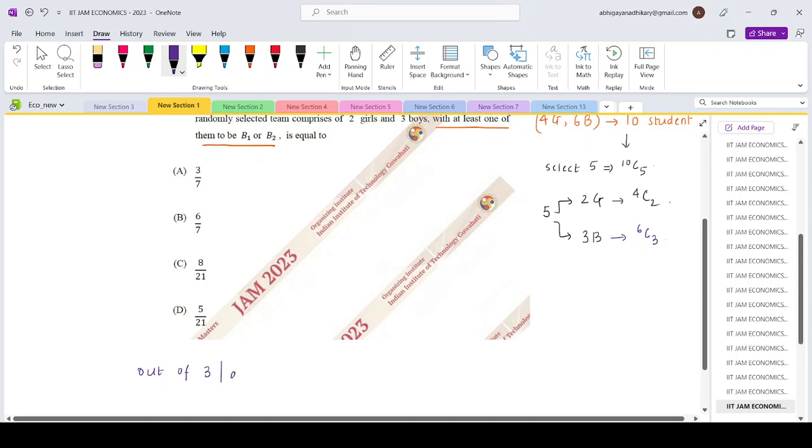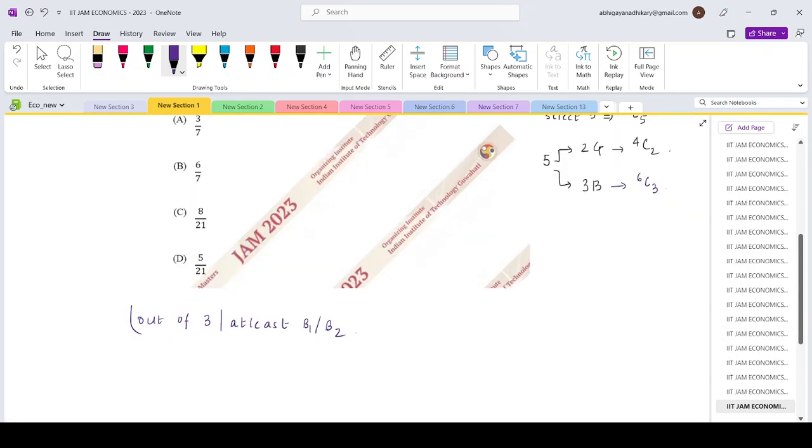Out of 3, at least B1 or B2 or both of them should be present. We are looking for the total number of cases representing this. That can be essentially given by the total possibilities minus neither B1 or B2 is present.